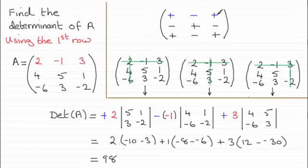We've got plus, minus, plus here, and we take the elements in the first row: 2, -1, 3. Then with those elements, we need to find the associated determinant.